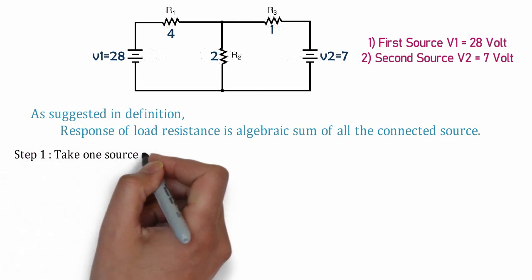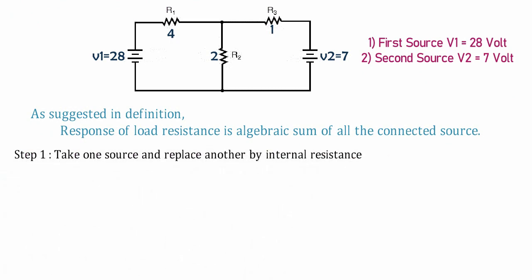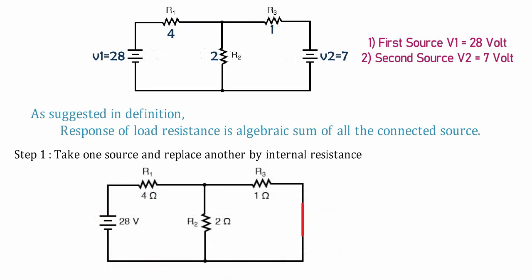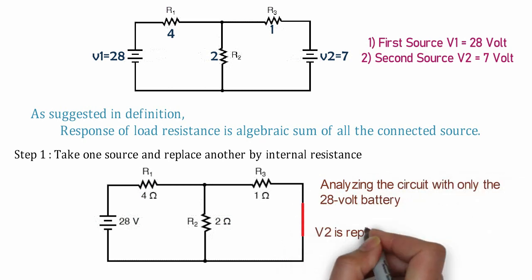In the first step, we are assuming one source and another source are replaced with their internal resistance. Here, I am starting analysis with 28V voltage source and another source is sorted.